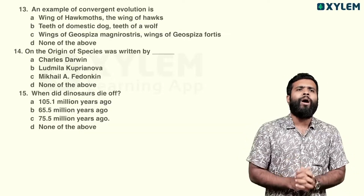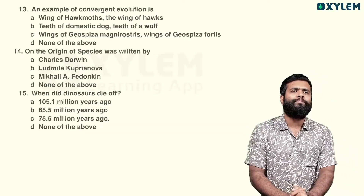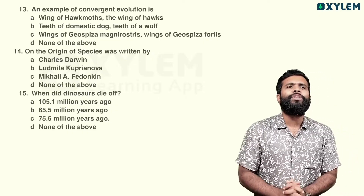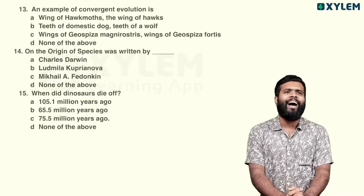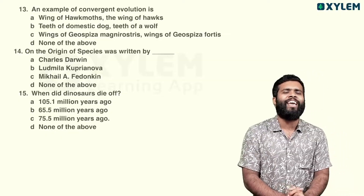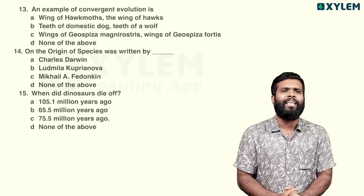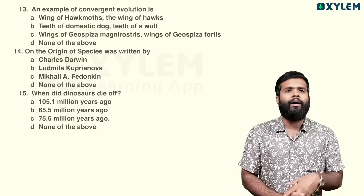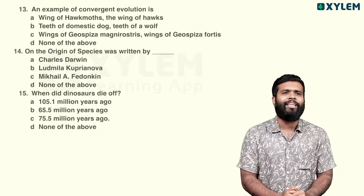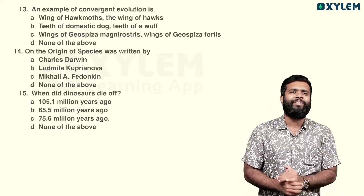On the Origin of Species was written by Charles Darwin. So option A is the answer.